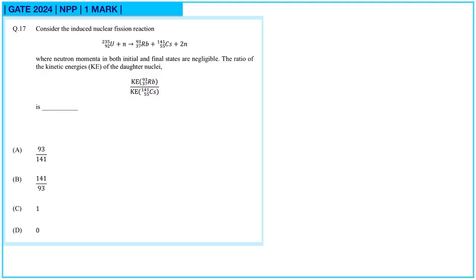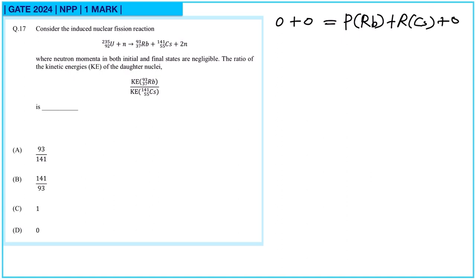For the conservation of linear momentum: the uranium atom will be at rest, so its momentum will be zero. Neutron momenta are also zero. So total initial momentum is zero, which equals momentum of rubidium plus momentum of cesium plus zero. In magnitude, these two momenta are equal.